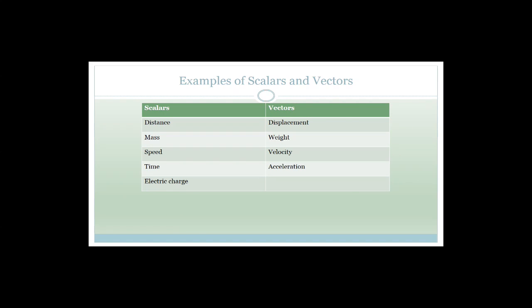Let's talk about the differences between scalars and vectors. A scalar is just a number — no direction. A vector has direction. For example, distance is a scalar: I walked two kilometers. Displacement is a vector: I walked two kilometers north. Displacement direction is typically north, south, east, west, left, or right.